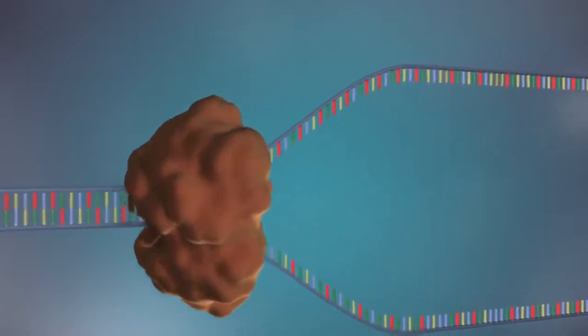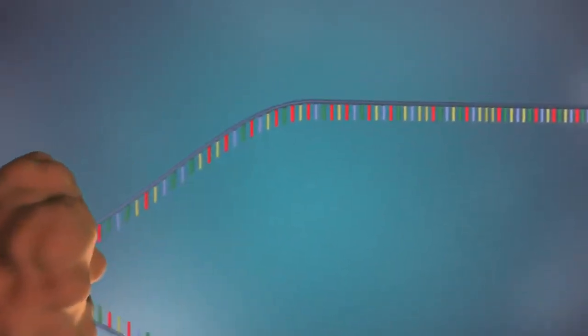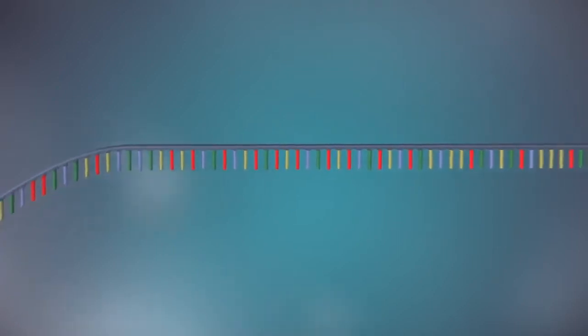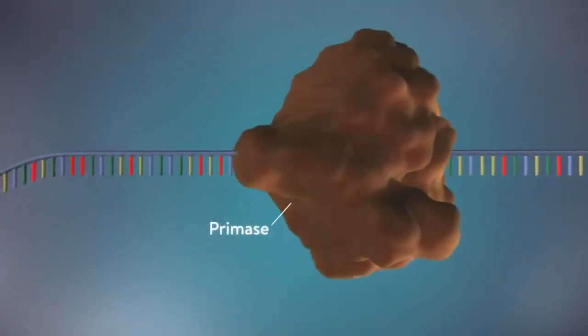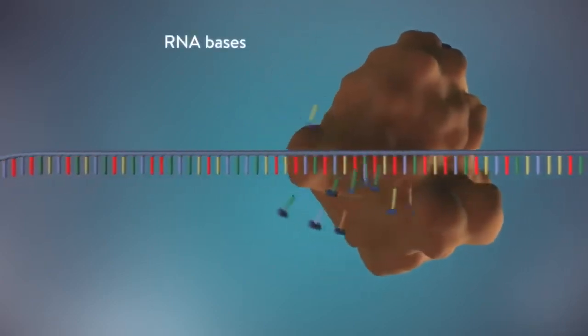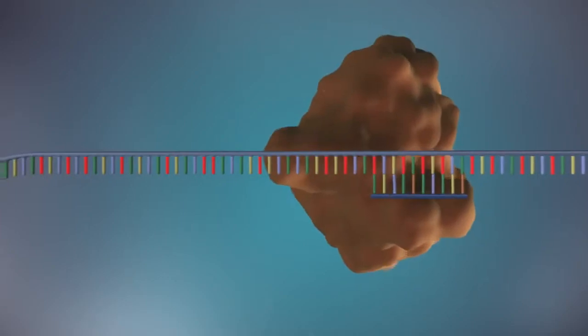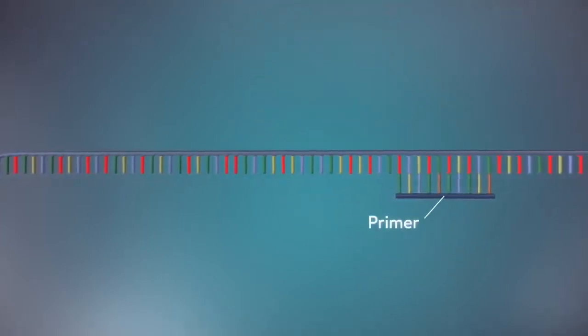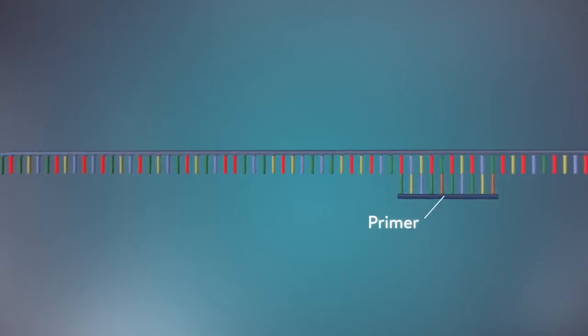The separated strands each provide a template for creating a new strand of DNA. An enzyme called primase starts the process. This enzyme makes a small piece of RNA called a primer. This marks the starting point for the construction of the new strand of DNA.